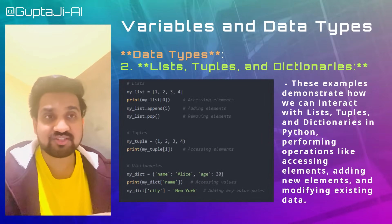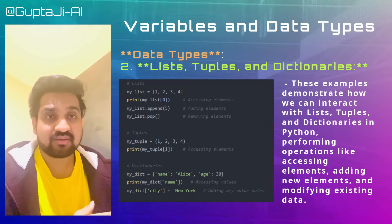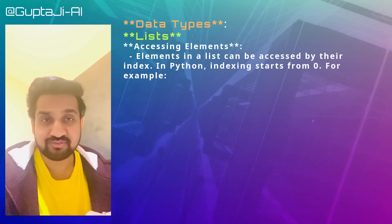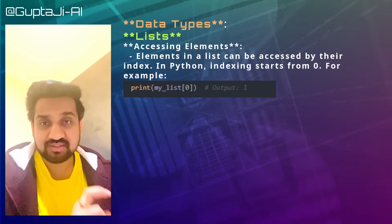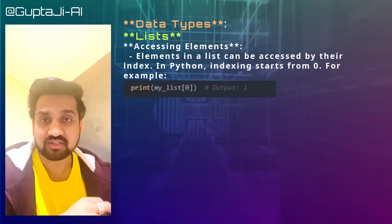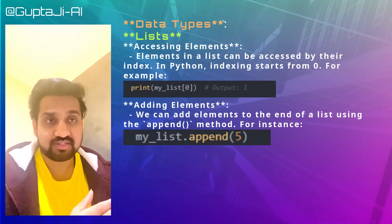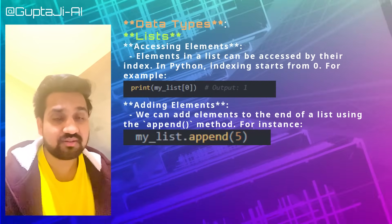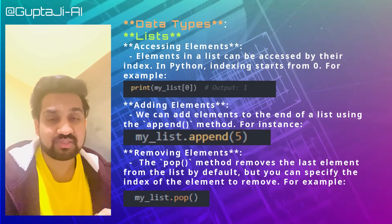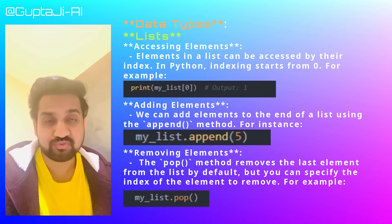Lists are ordered collections of items that can contain elements of different data types. They are mutable, meaning elements can be changed after the list is created. Elements are accessed by their index, and in Python, indexing starts from 0. We can add elements using the append method, and the pop method removes the last element by default, though you can specify an index to remove.